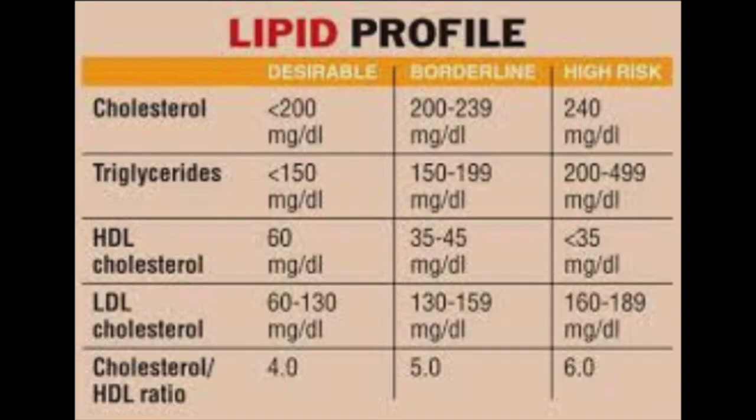There are also certain other novel markers called Apo A, Apo B, lipoprotein A, and so on. What are the normal values? Total cholesterol has to be kept less than 200. LDL cholesterol has to be kept less than 100, and in certain diseases — if somebody is already having cardiovascular events or risk factors — we keep it less than 70.